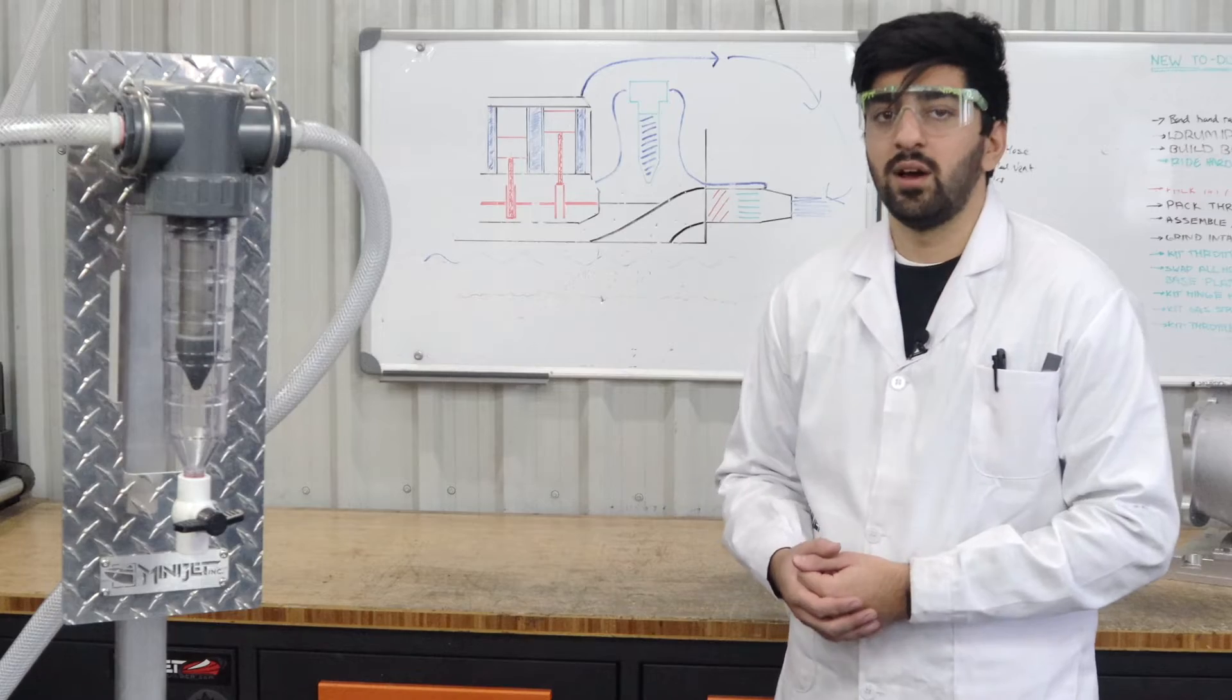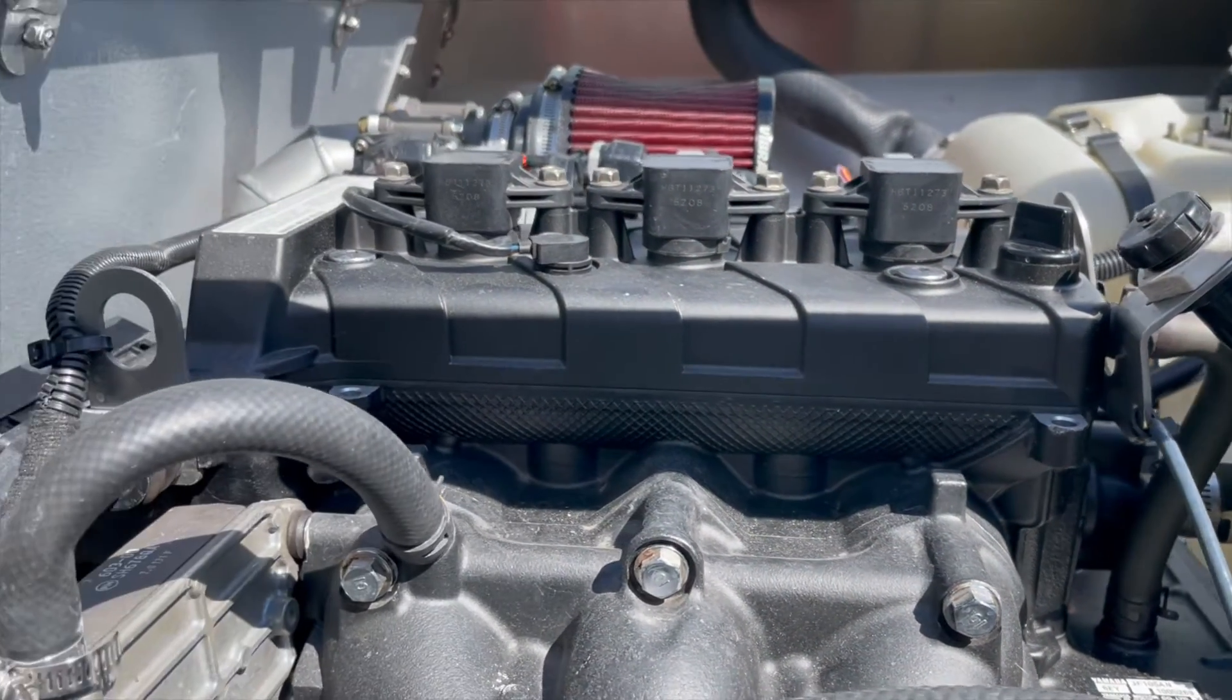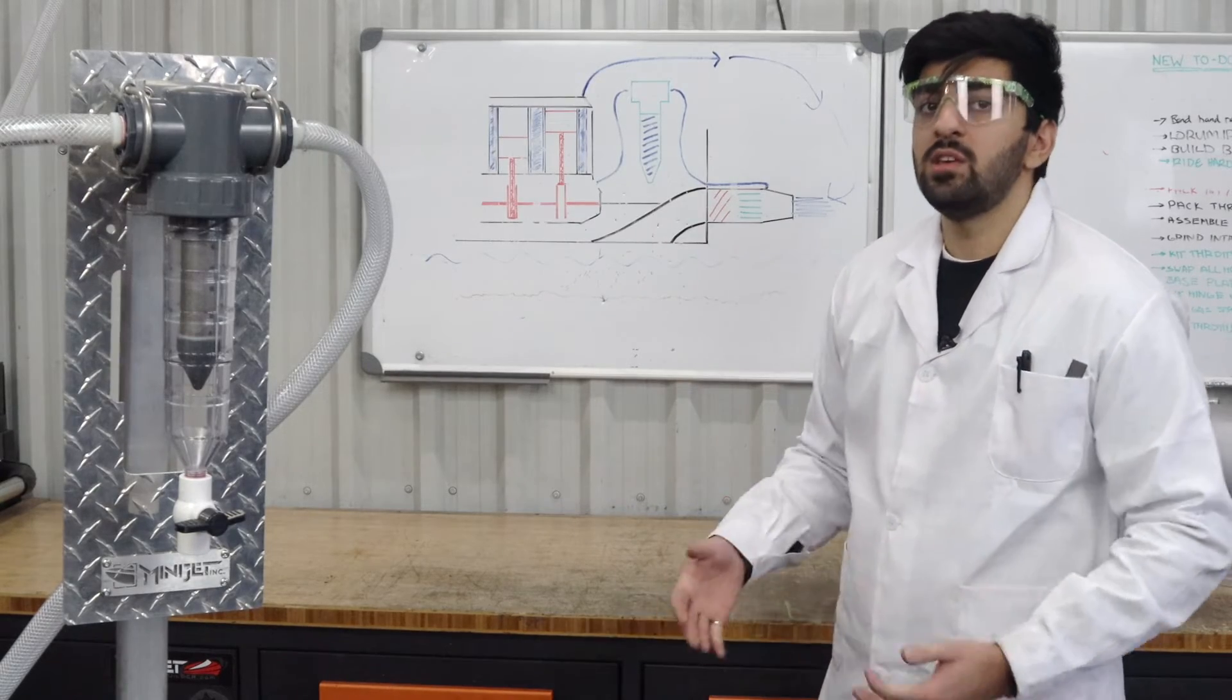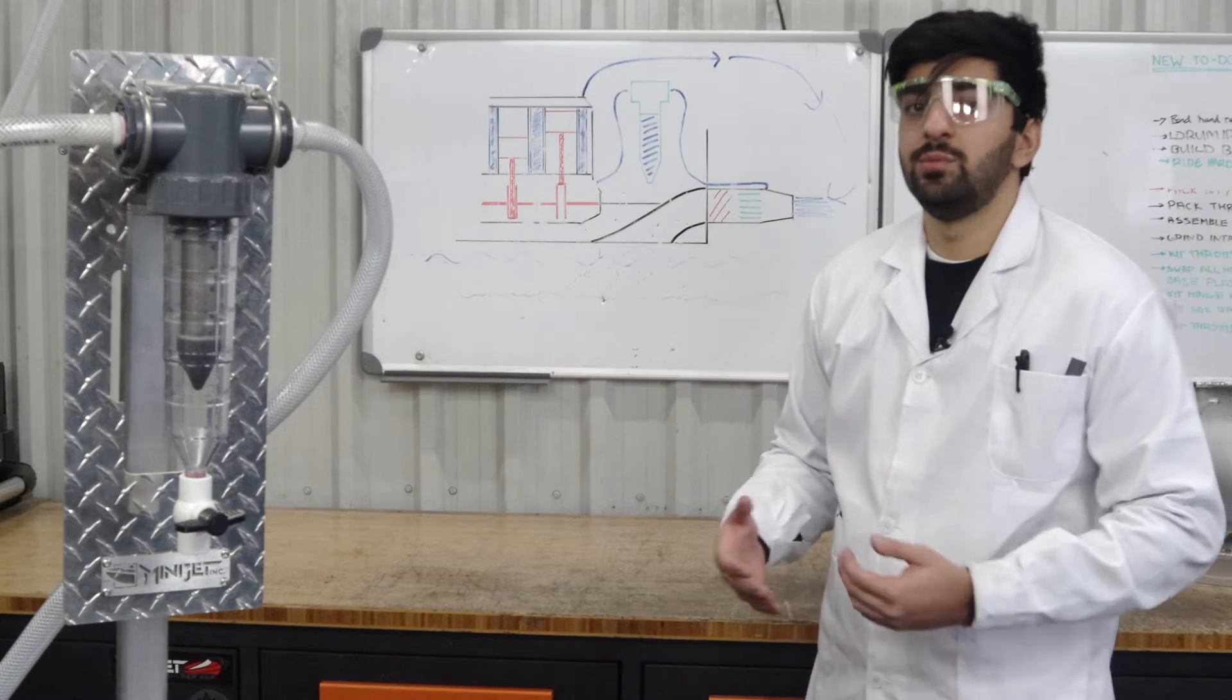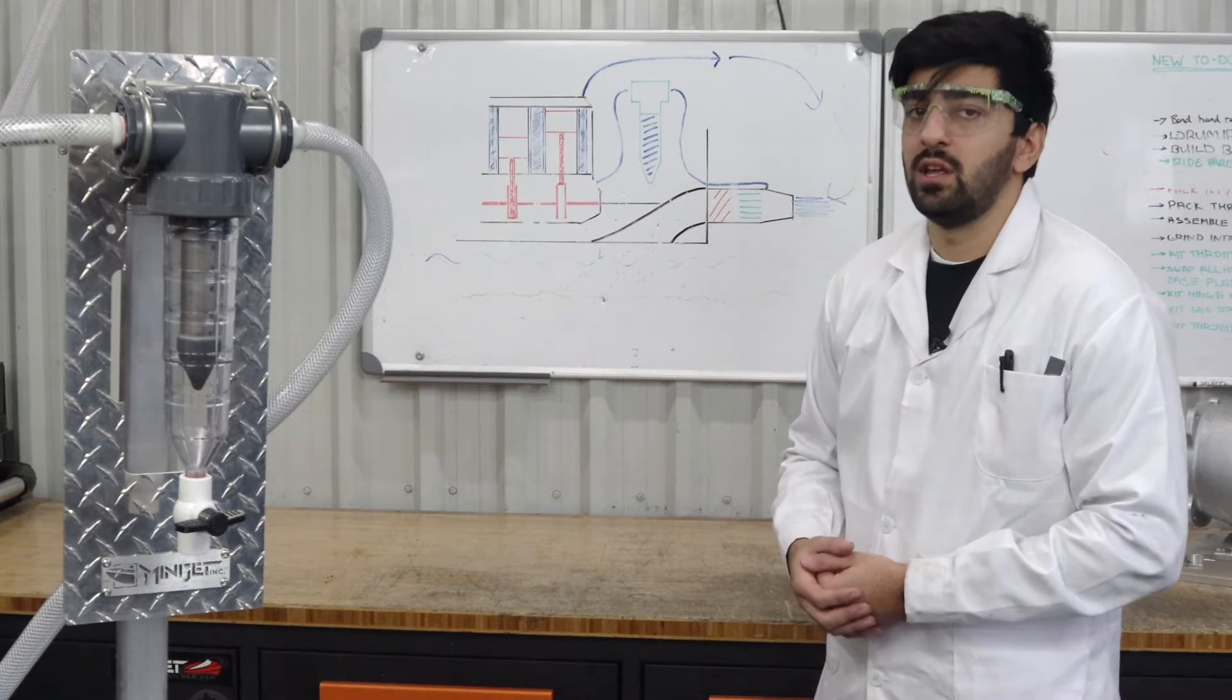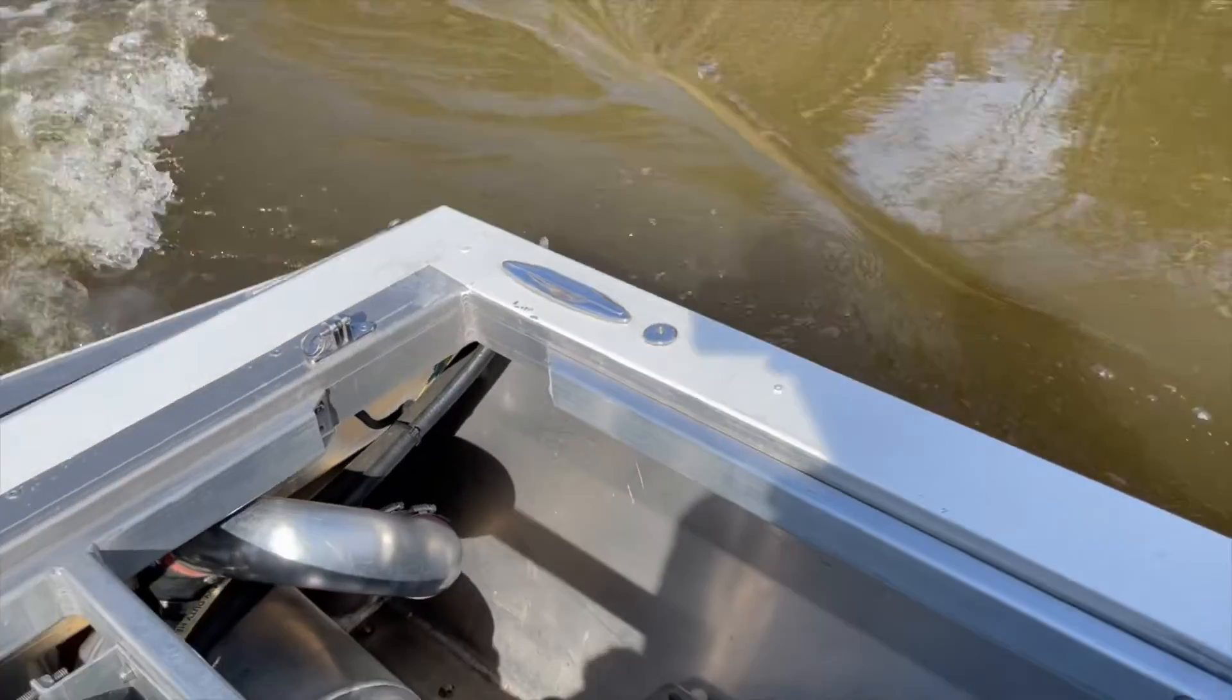However, we start to run into some issues when we get to the cooling pickup. Some of the water coming off of the jet pump is rerouted and sent inboard to cool your engine. If this water is contaminated with sand, it may accumulate in your cooling system, which could ultimately lead to overheating as well as a host of other bad things, potentially resulting in engine failure.